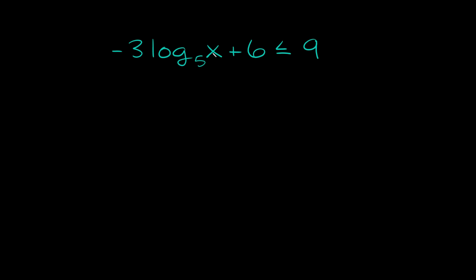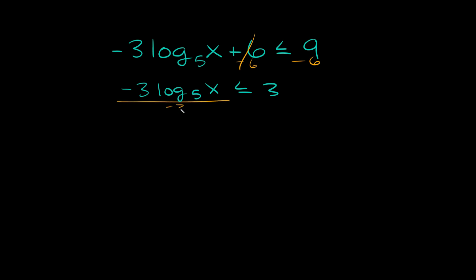Here's the next one: negative 3 times log base 5 of x plus 6 is less than or equal to 9. The first thing we can do is get rid of this 6 by subtracting 6 from both sides, giving us negative 3 log base 5 of x is less than or equal to 3. Then we get rid of this negative 3 by dividing both sides by negative 3. Since we're dividing by a negative number, remember you have to flip the sign, so it becomes greater than or equal to.